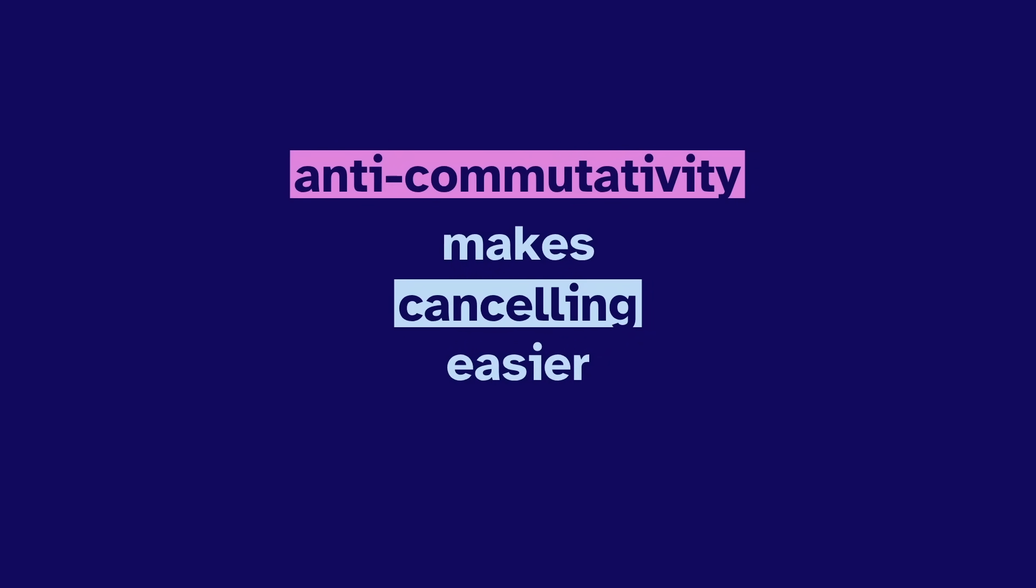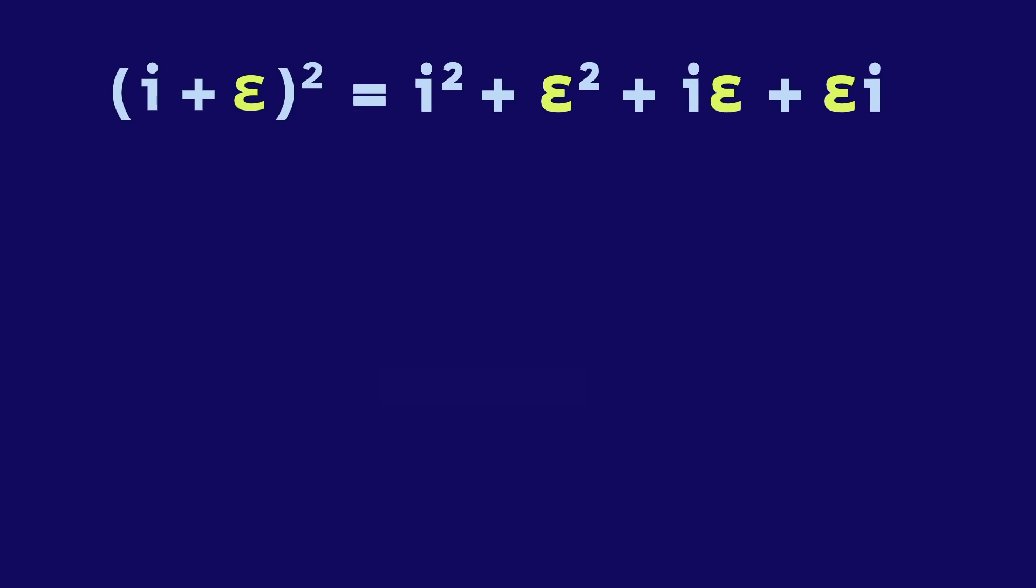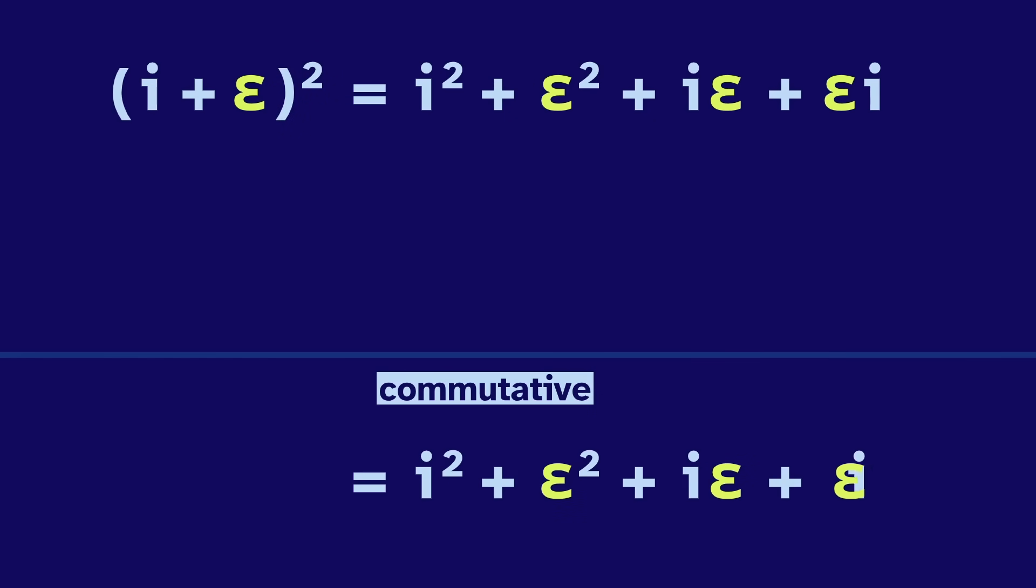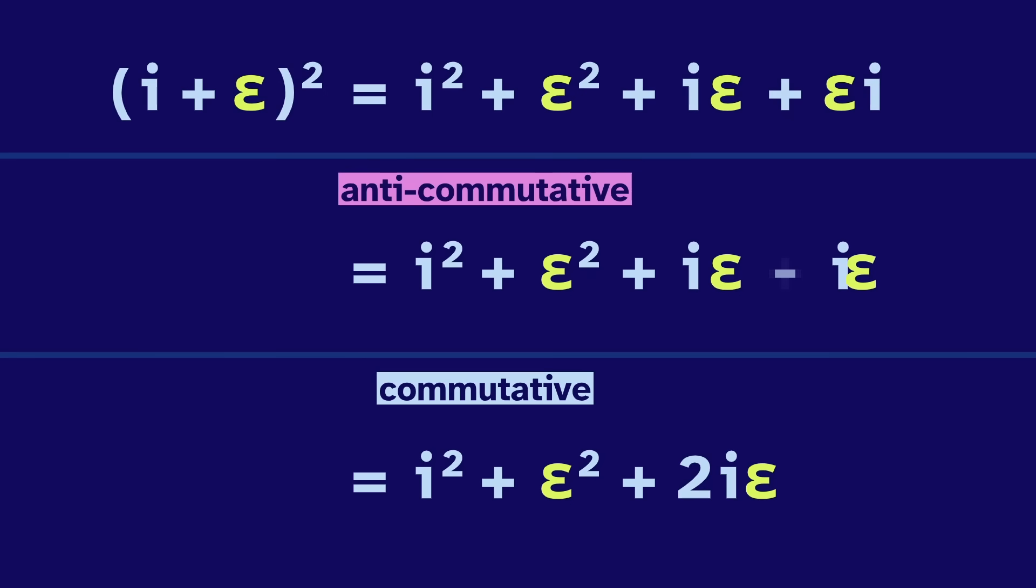This difference occurs because anti-commutativity makes canceling easier. As an example, let's square i plus epsilon. When commutative, the imagiduals combine. But when anti, one of them turns negative and they cancel with each other, leaving us with a simpler result.